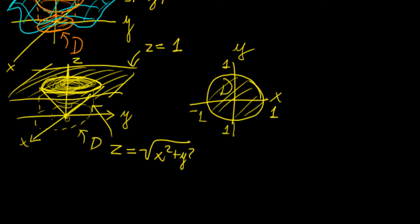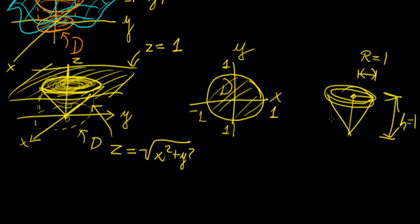This cone intersects the plane at the points minus 1, 1, and 1, giving the same silhouette as that circle. This is the same as saying the cone has height h equals 1 and radius r equals 1.